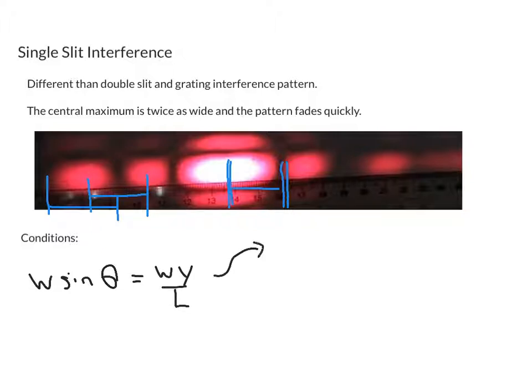This time, our bright spots are shifted off by a half because that central bright spot is so wide. So our constructive interference has the plus a half, and our destructive interference is n lambda.